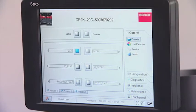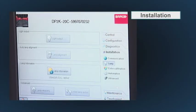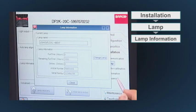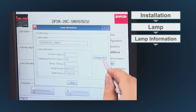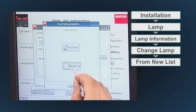Go via the communicator touch panel to the menu: Installation, Lamp, Lamp information. When the lamp information window is displayed, press change lamp. A reset lamp parameters message will be displayed. Tap on from new list.